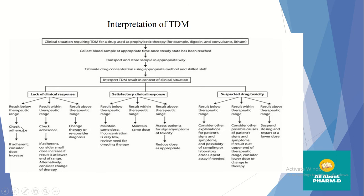If the result is below the therapeutic range, check adherence — whether the patient is taking drugs on time, refilling prescriptions, and not missing doses — and consider a dose increase. If within the therapeutic range but no therapeutic effect, slightly increase the dose or change the therapy. If above the therapeutic range, change the therapy and reconsider the diagnosis. In a satisfactory case with concentration below range, maintain the same dose and review the need for ongoing therapy; if within range, maintain the same dose.